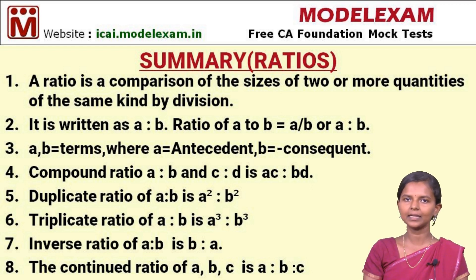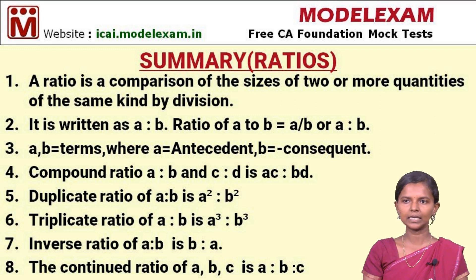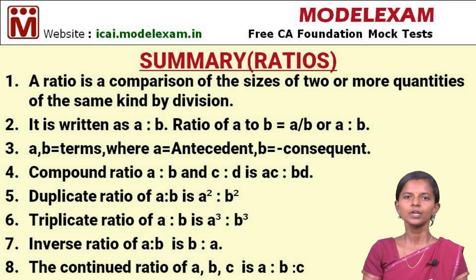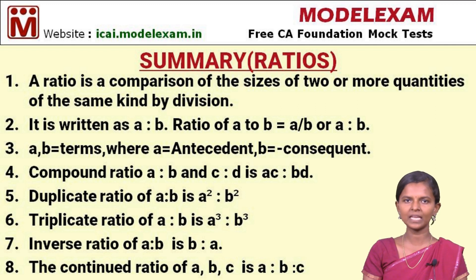The sixth point is triplicate ratio of A is to B — we raise to the power of 3, so A cube is to B cube is the triplicate ratio of A is to B. The seventh point is inverse ratio: A is to B is written as B is to A.